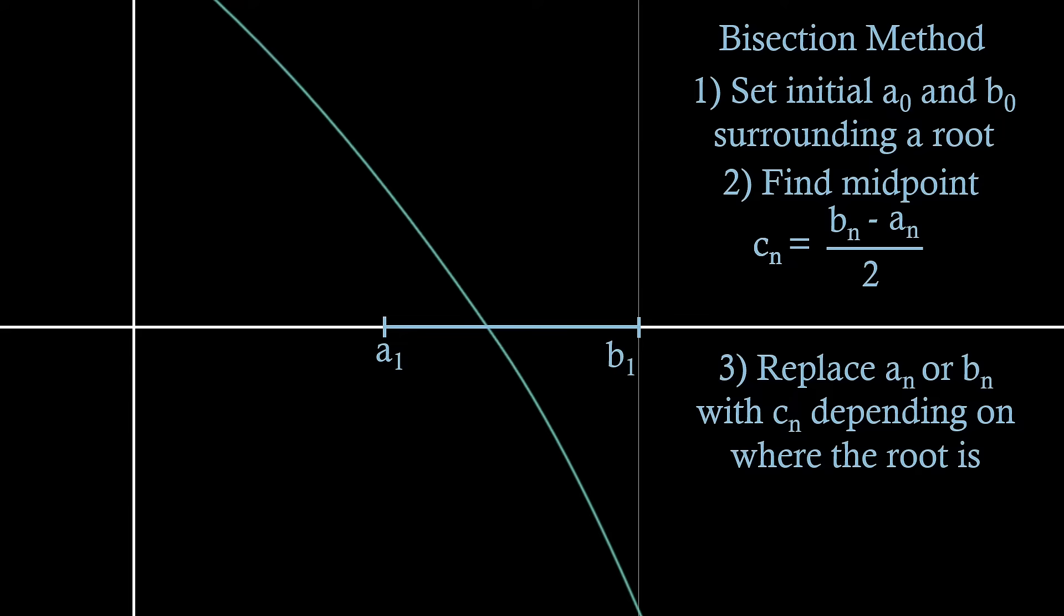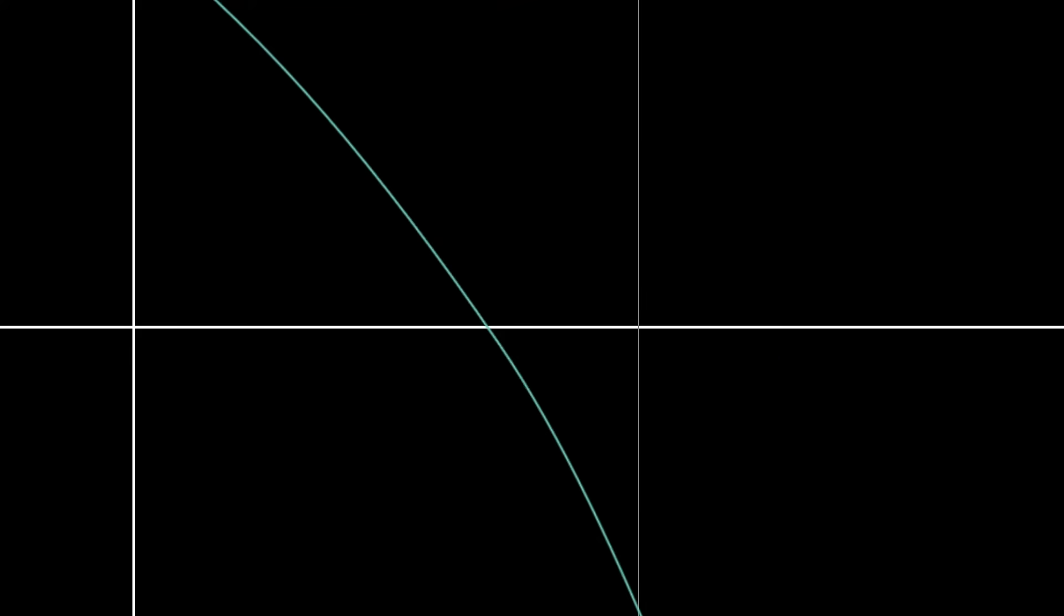Once this is all done, we take the final value of cn to be the estimated root. The n part of these values here is used to denote iteration number, hence why we set a0 and b0 for our initial guess. A method where we approximate a solution to a problem using an iterative or discretised approach is known as a numerical method, and we usually solve these using computers to iterate these algorithms.